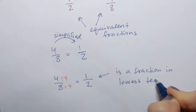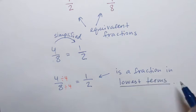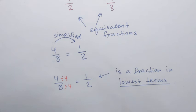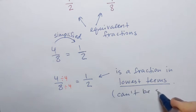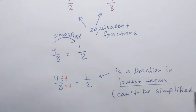Being in lowest terms means the fraction cannot be simplified any further — we cannot reduce the numbers any further.